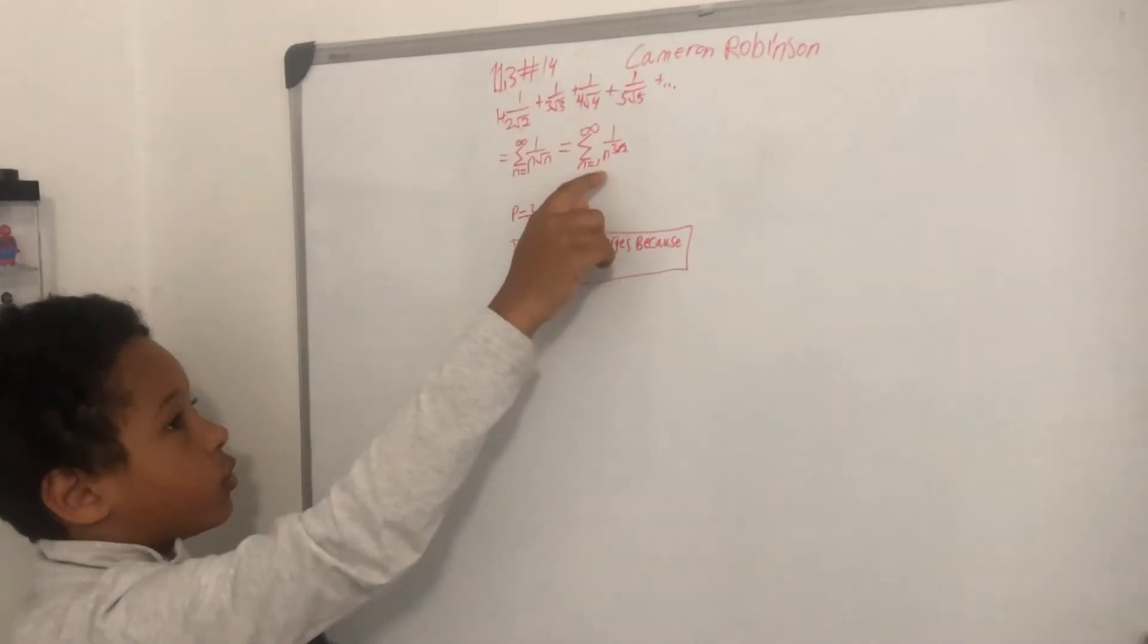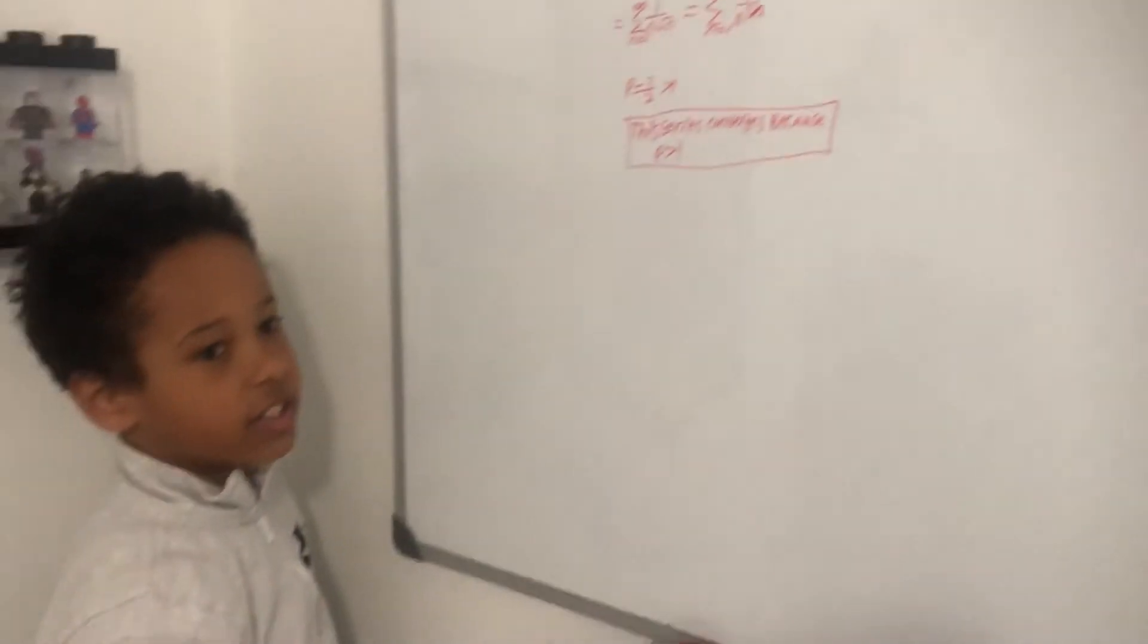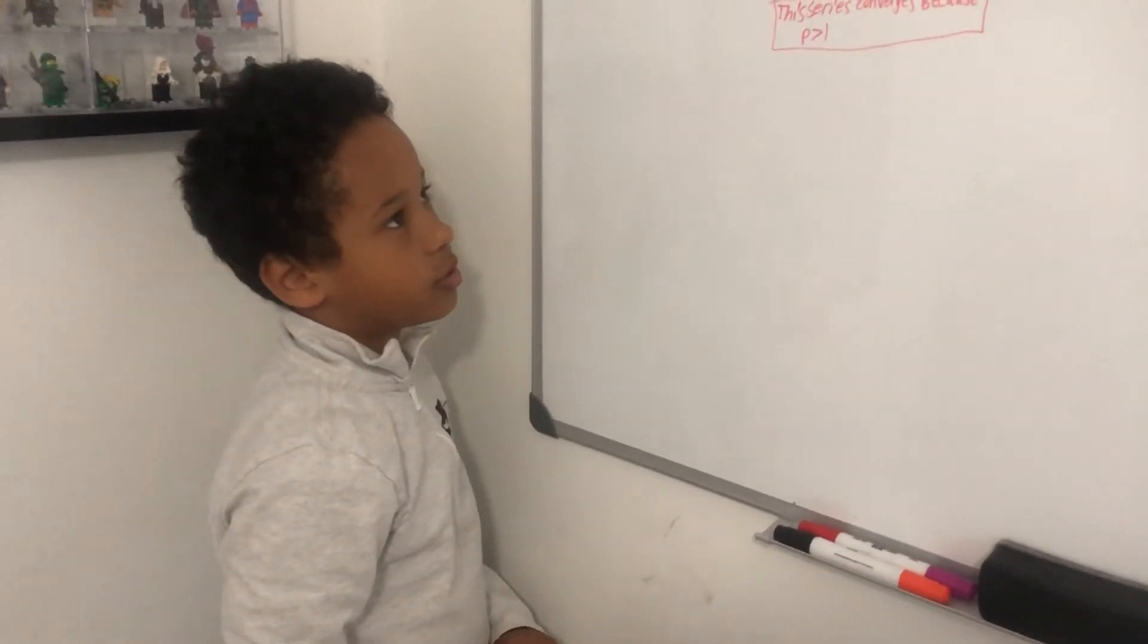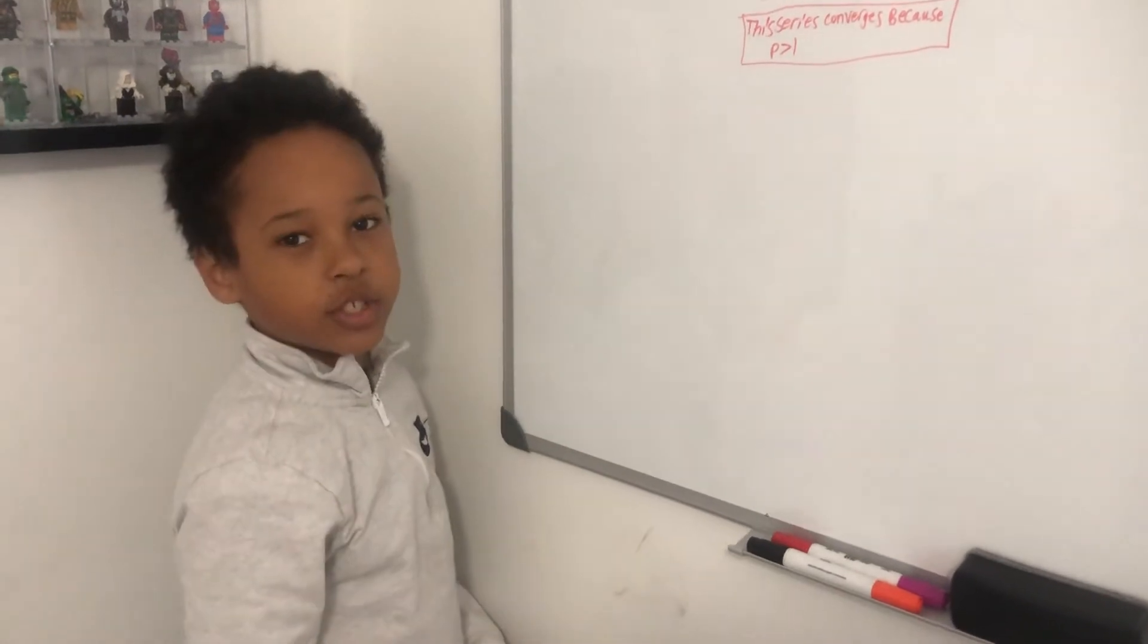Then you can simplify that because everybody knows, let's say, 2 squared over 2 is 2 to the 3 halves.